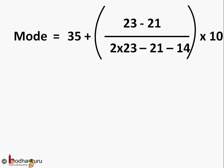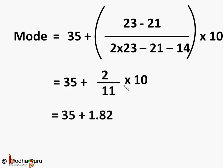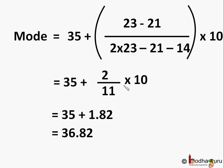Mode = 35 + [(23 - 21) / (2 × 23 - 21 - 14)] × 10. Solving the part inside the bracket, we get 2/11. So it becomes 35 + (2/11) × 10, which equals 35 + 20/11. This is approximately 1.82, so it becomes 35 + 1.82, which equals 36.82 years.